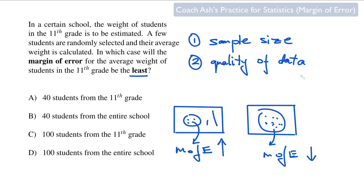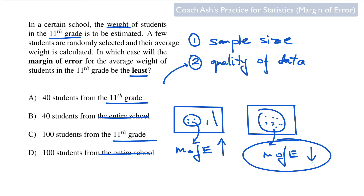Your estimate gets better if these two conditions are followed. Here, you've got 11th grade students and their weight is to be determined, so you need students only from the 11th grade — that's the quality of data. If you take students from the entire school, there could be first grade or 12th grade students whose weights aren't relevant, so you cross those choices out. Now dealing just with 11th grade students, you've got 40 students versus 100 students. As the sample size increases, the margin of error drops, so 100 students — choice C — is the correct answer.